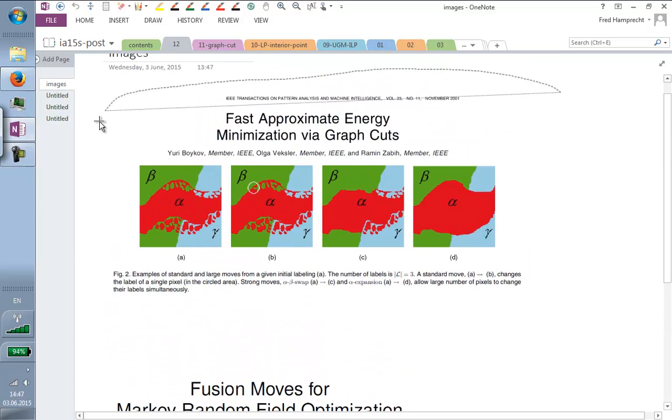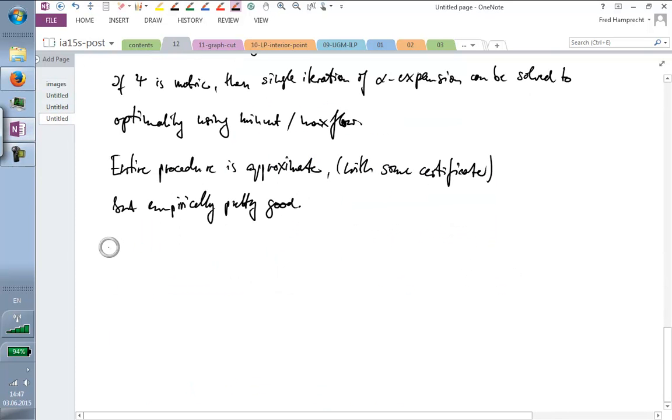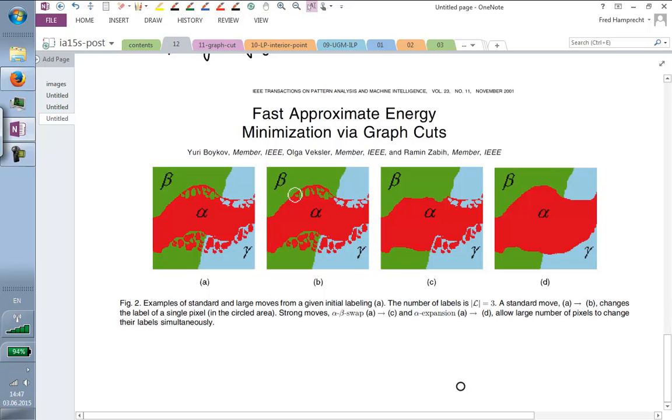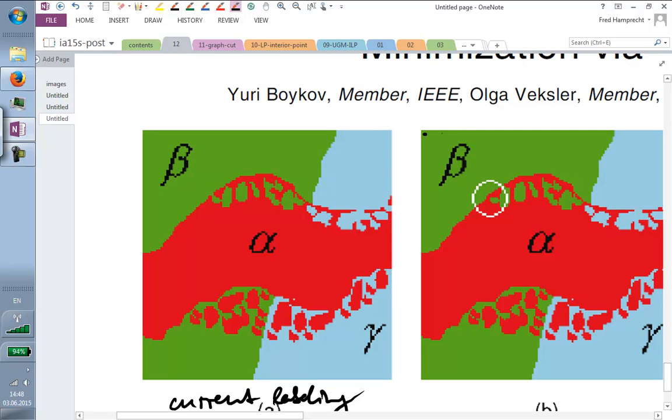Okay, so the sub-modularity of phi is true if psi is a metric. Because these conditions here, one, two, three, they are, these are the definition of, these are the characterizing properties of a metric. So the bottom line is if psi is a metric potential, then the alpha, then a single iteration, the definition of alpha expansion can be solved to optimality using mincut or maxflow.